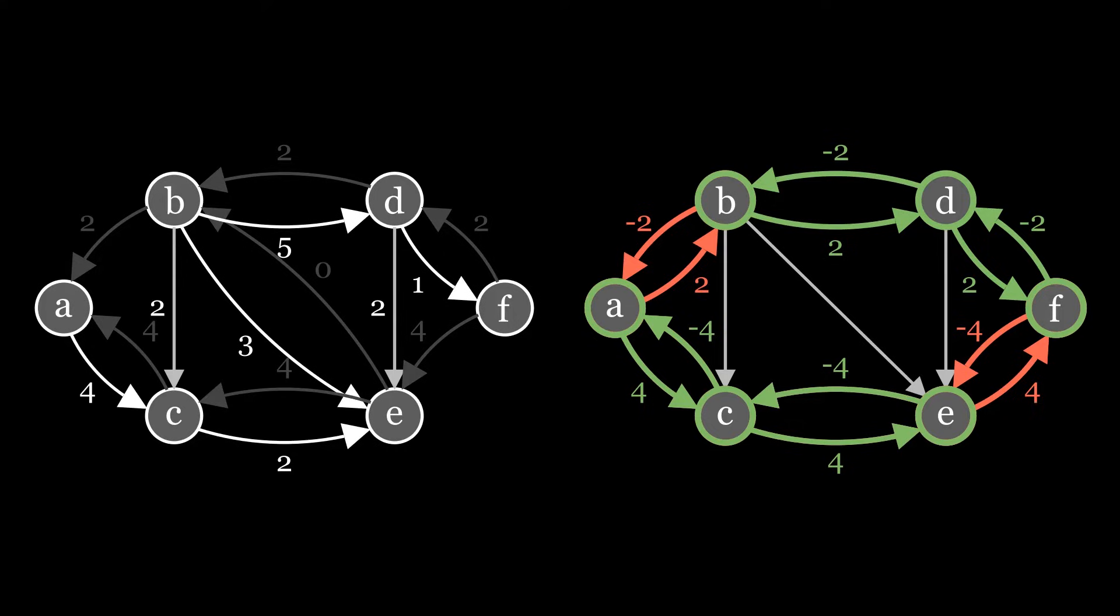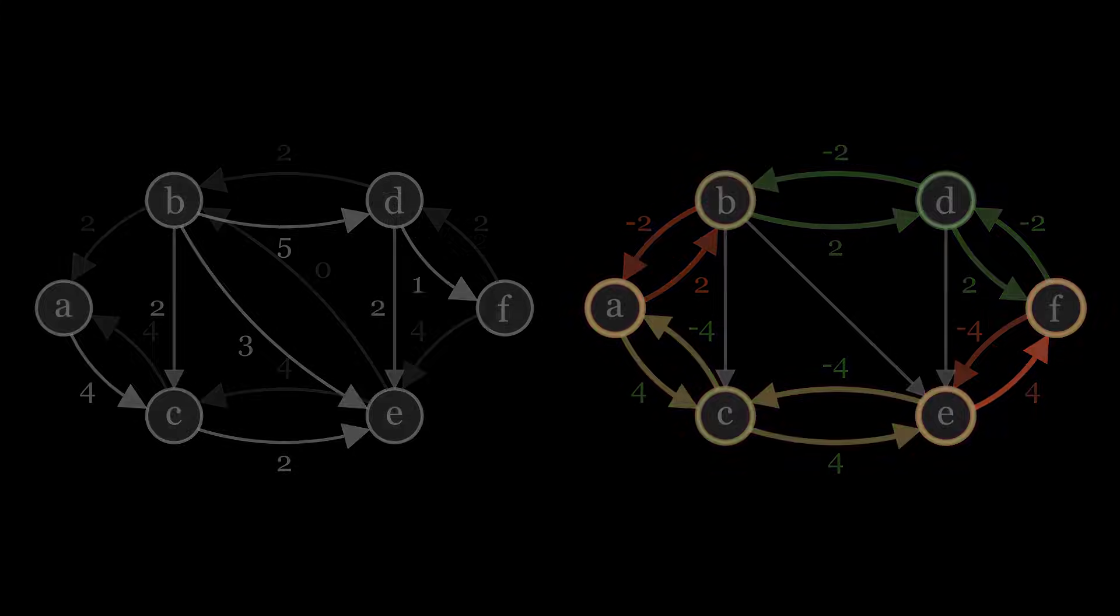The algorithm stops with a flow of 6. Is there a way to prove that 6 is the maximum flow possible?